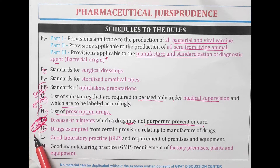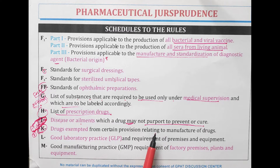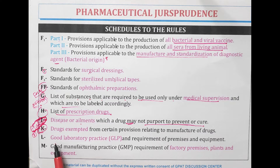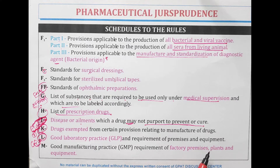Schedule K means okay — drugs which are exempted from certain provisions relating to the manufacture of drugs. Schedule L — LGLP — L is for good laboratory practice and the requirement for the premises and equipment.